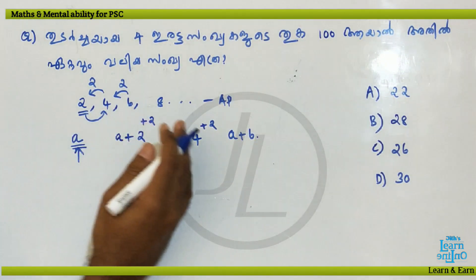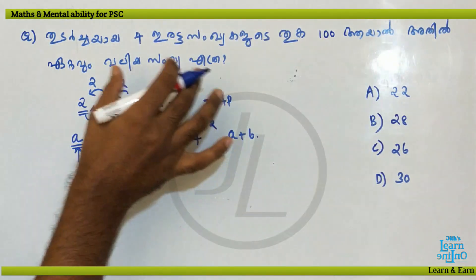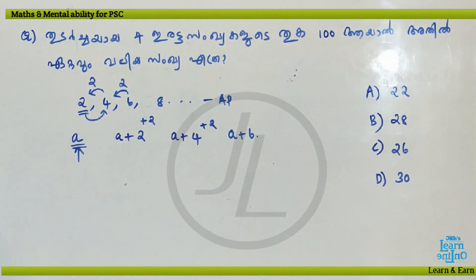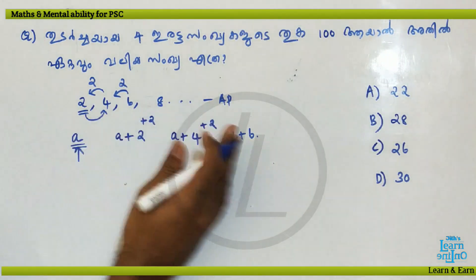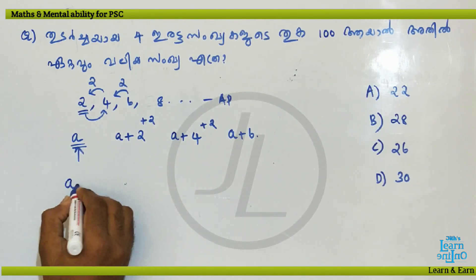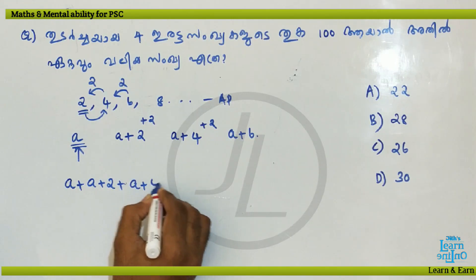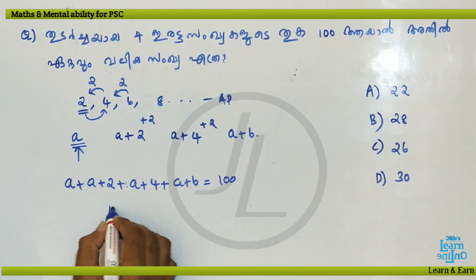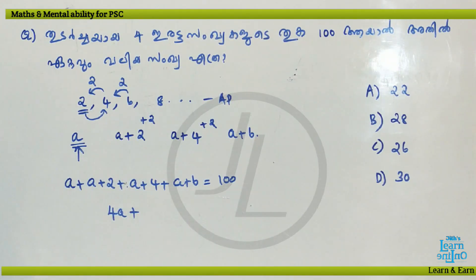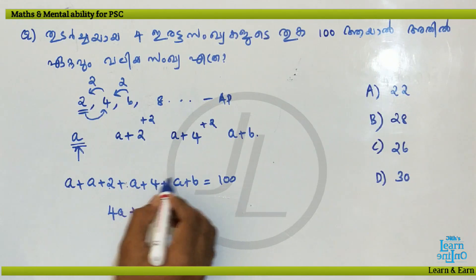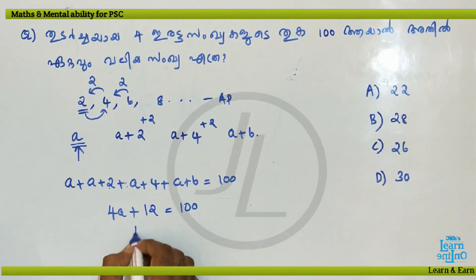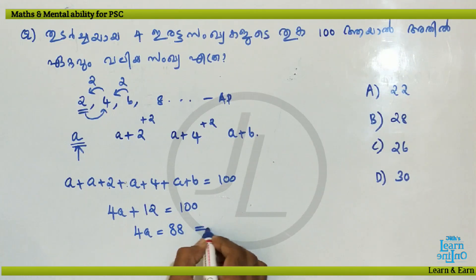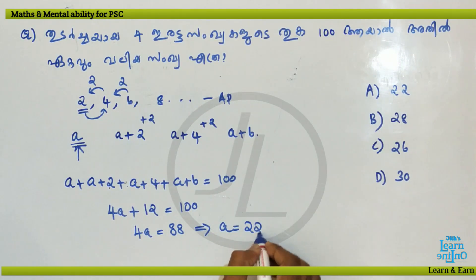Now it is very important to us, and it is the value of 6. You could consider the value of 6. For the value, A plus 2 plus A plus 4 plus A plus 6 is equal to 100. So 4a plus 2 plus 4 plus 6 is equal to 4a plus 12 is equal to 100. So 4a is equal to 88. A is equal to 22. We are able to get 22.